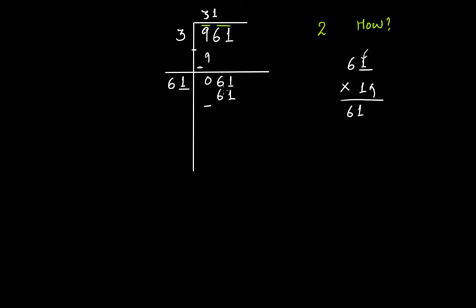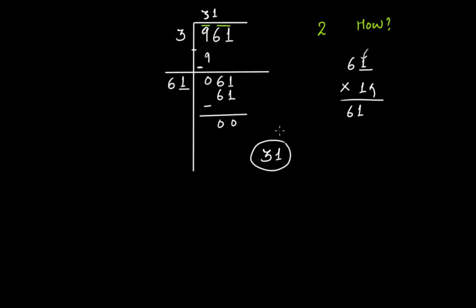If you put 1 here and multiply 61 by 1, you get 61. When you subtract it you get 0. So what is your square root in this case? The quotient is the square root — 31 is the square root. We have some more examples so if there is any confusion it will go away.